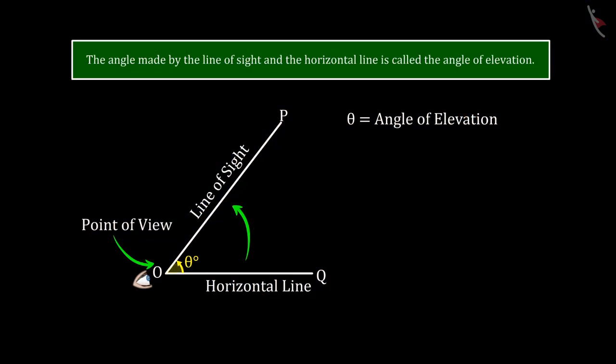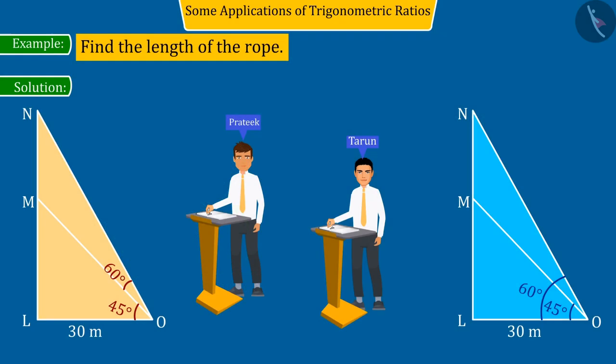We know that the elevation angle is made up of line of sight and horizontal line. Therefore, the correct elevation angle of the fifth floor, angle N, O, L would be equal to 60 degrees.